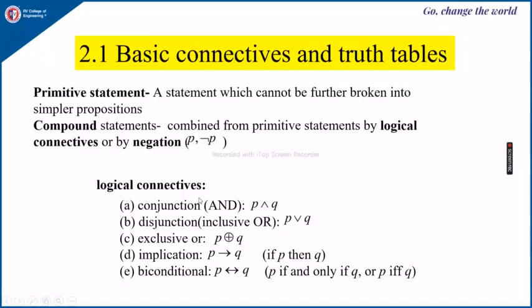Some logical connectives which we can use in compound statements are: conjunction, or AND, which is written using this symbol P and Q. Then disjunction, also called inclusive OR, and is written as P or Q. Next, exclusive or, this is P exclusive or Q.